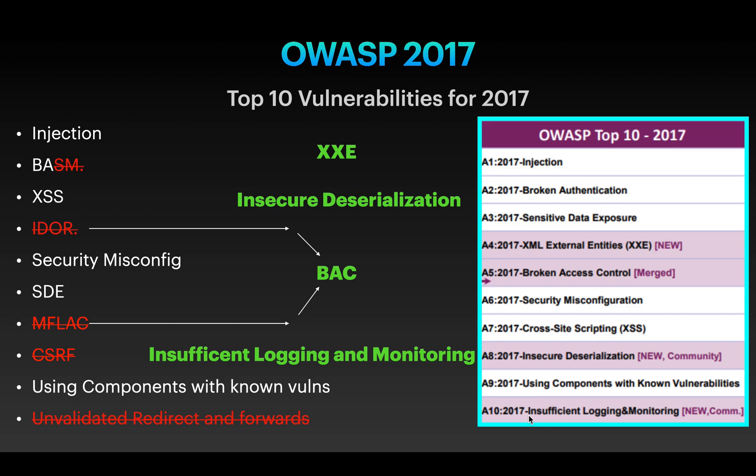So what are the key differences between 2013 and 2017? There are basically four key differences. First is XXE; second is Insecure Deserialization; third is Broken Access Control, which is the combination of IDOR and Missing Functional Level Access Control; and the last one is Insufficient Logging and Monitoring.